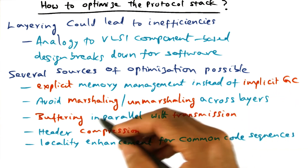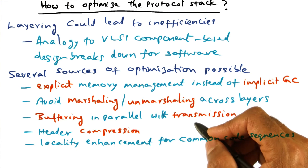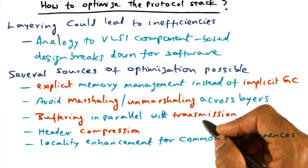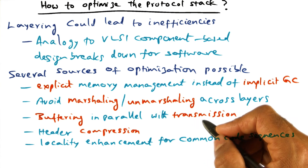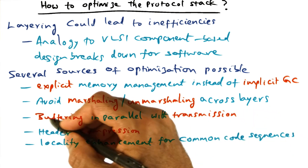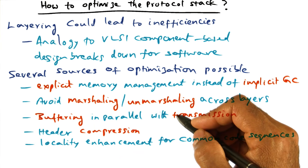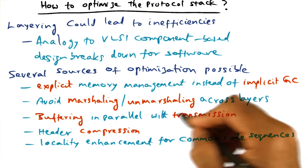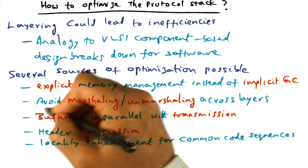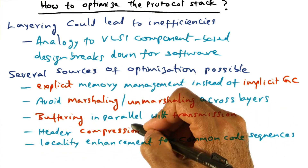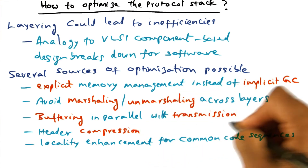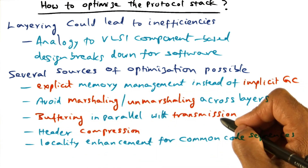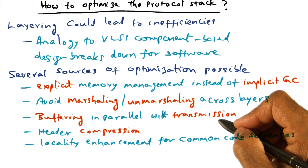Another opportunity, especially in networking systems, is the fact that there is going to be communication and computation. If you think about the TCP/IP protocol, it has to necessarily buffer the packets it's sending out, because if the packets are lost, it may have to retransmit. This is a situation where we can overlap this buffering — which is computation on the sending node — with the actual transmission. That's another opportunity for optimization.